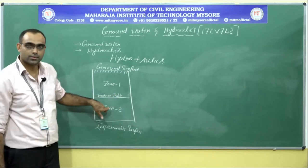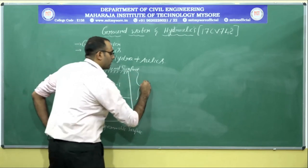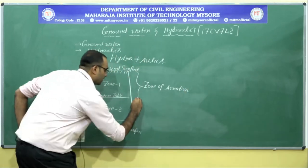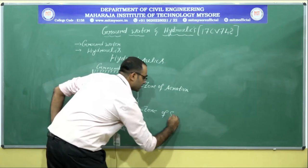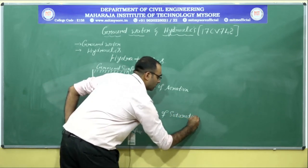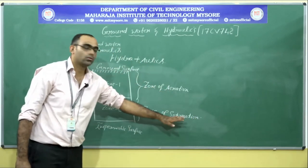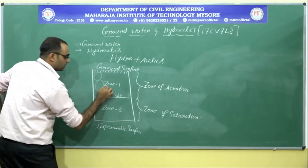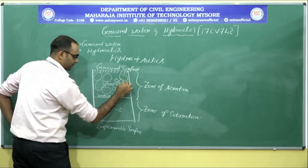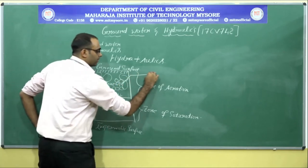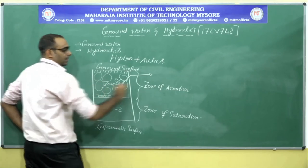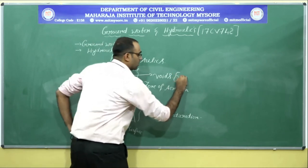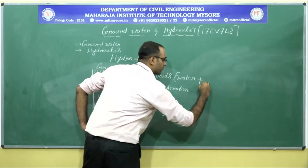Groundwater exists in two zones: Zone 1 and Zone 2. Zone 1 is called the zone of aeration and Zone 2 is called the zone of saturation. The zone of aeration is made up of rocks and tiny soil particles. There will be space available between these soil particles and rocks, called voids. These voids are filled with a little bit of water and more amount of air.